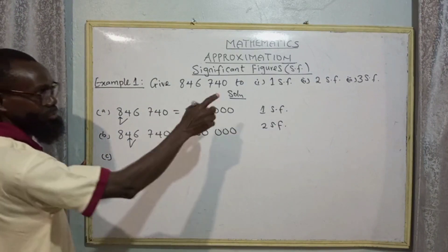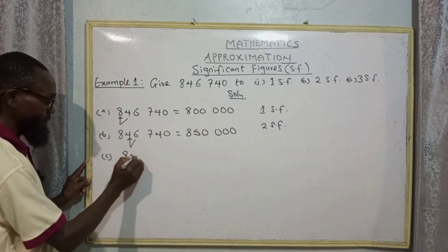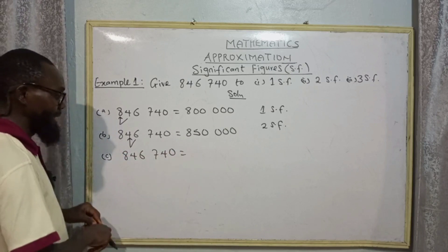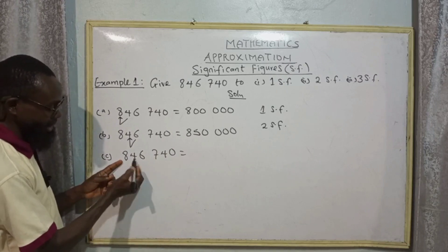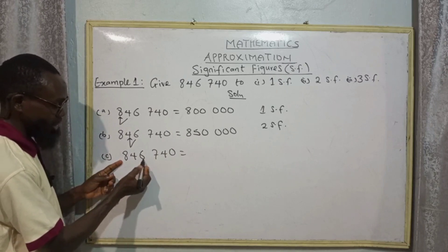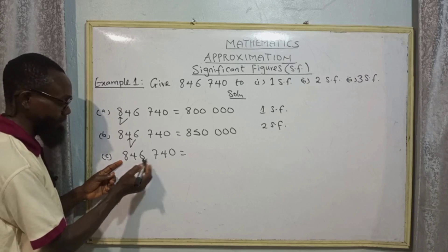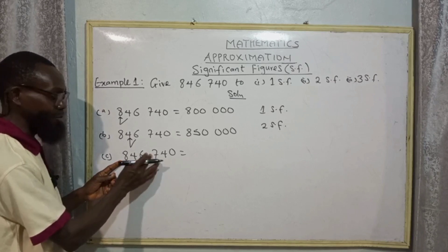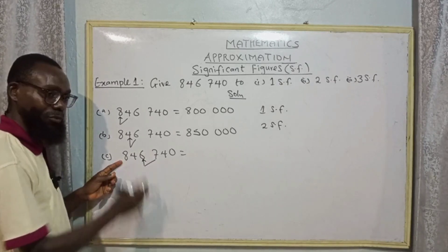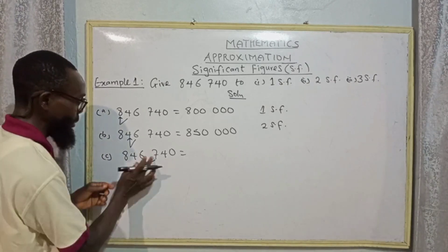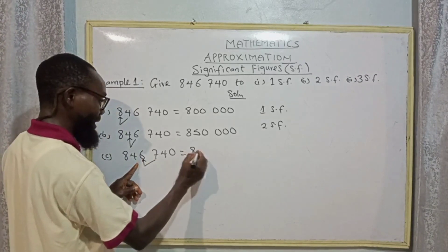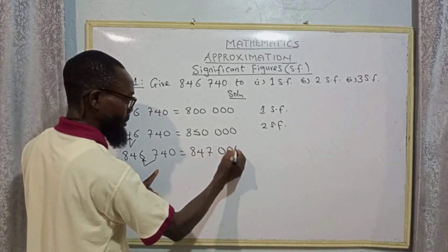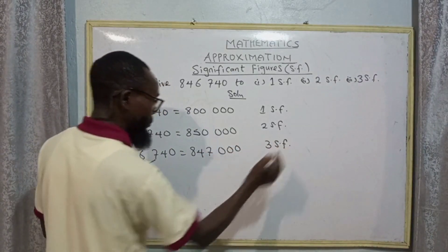For three significant figures: 846,740. The first SF is eight, second is four, third is six. When you determine the third SF, consider the digit to the right — seven. Seven becomes one (between five to nine), add the one to six making seven. So we have 847,000 to three significant figures.